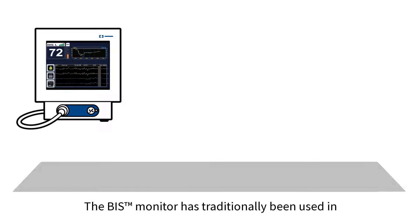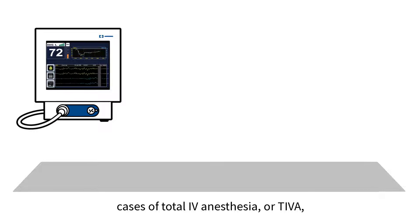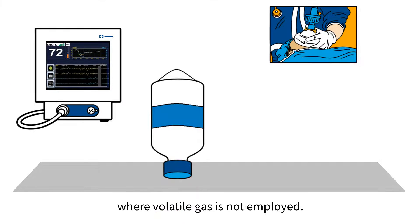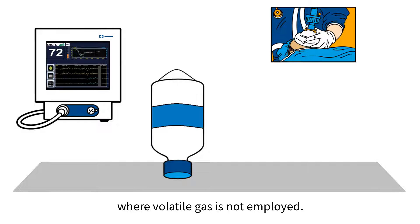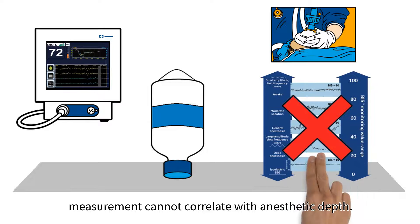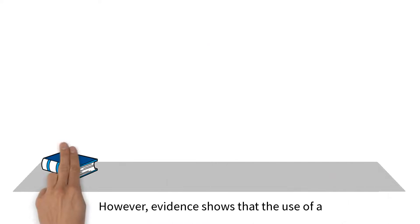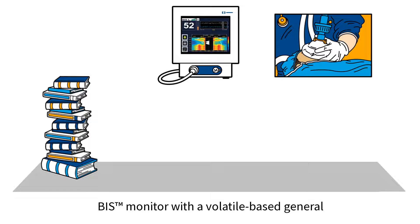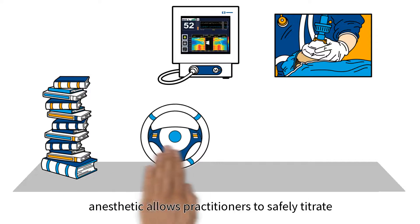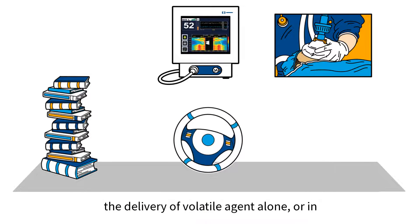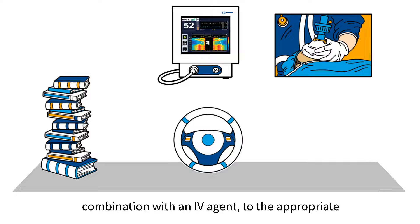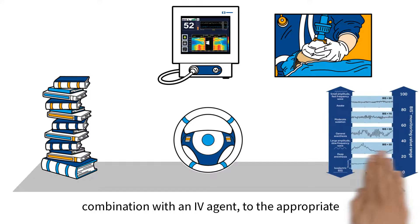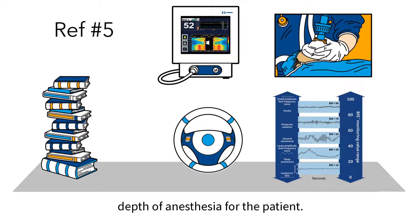The BIS Monitor has traditionally been used in cases of total IV anesthesia, or TIVA, where volatile gas is not employed. In these cases, end-tidal volatile gas measurement cannot correlate with anesthetic depth. However, evidence shows that the use of a BIS Monitor with a volatile-based general anesthetic allows practitioners to safely titrate the delivery of volatile agent alone, or in combination with an IV agent, to the appropriate depth of anesthesia for the patient.